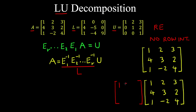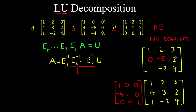Our first elementary row operation involves subtracting 4 times row 1 from row 2. We start with an identity matrix and replace the relevant entry with minus 4 to zero out the entry in row 2. So minus 4 times 1 plus 4 times 1 is 0. Then minus 4 times 2 is minus 8, plus 3 is minus 5. And minus 4 times 3 is negative 12, plus 2 times 1 is negative 10.